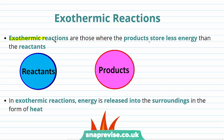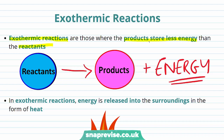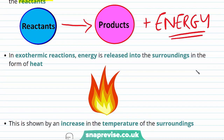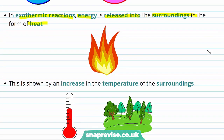Firstly, we can think about exothermic reactions. The word exothermic is just used to describe a reaction where the products store less energy than the reactants. As we've seen before, if the products have less energy than the reactants, then as the reaction happens, some of this additional energy will be released. This ensures that the amount of energy is conserved between the left hand side of this reaction arrow and the right hand side. This energy is therefore released into the surroundings, and in an exothermic reaction, the energy is released into the surroundings in the form of heat.